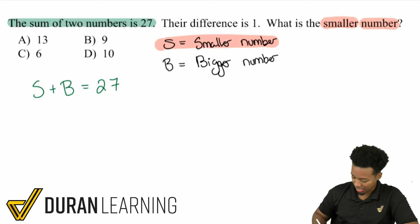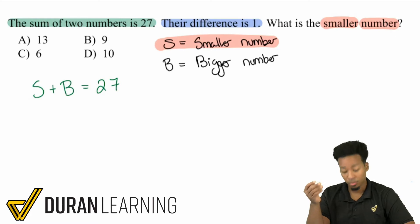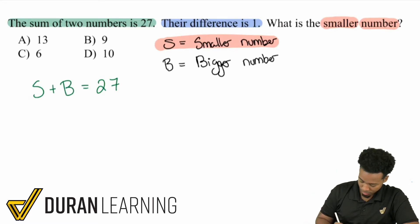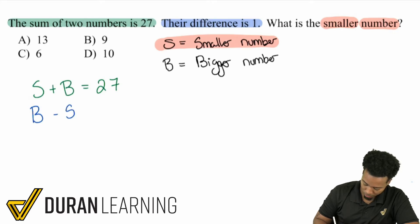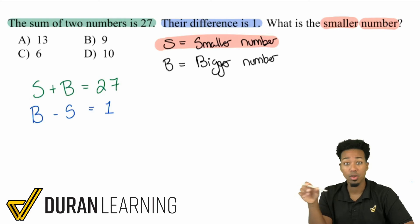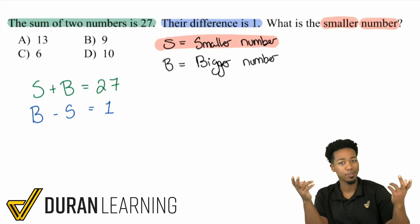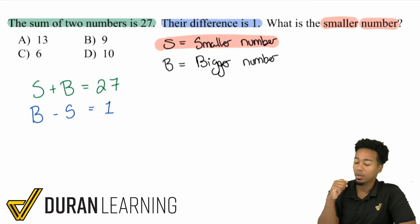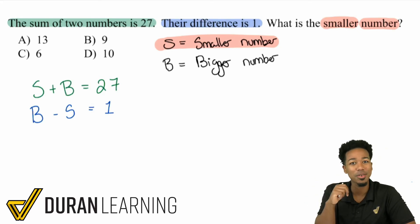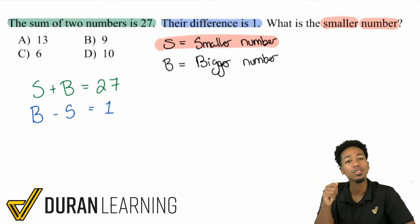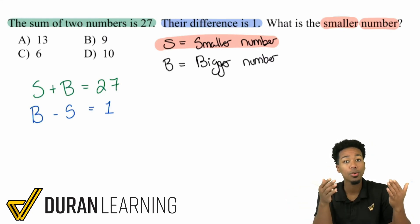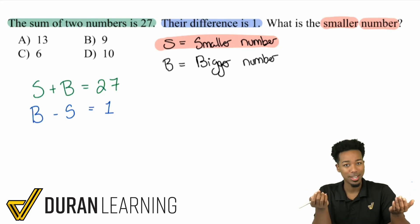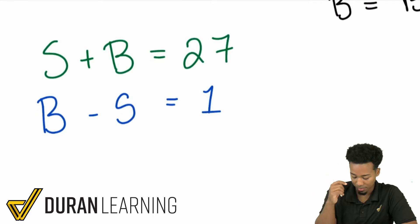Now the second sentence: their difference is one. Difference means subtraction. We take the bigger number minus the smaller number, so B minus S equals 1. You can't write S minus B because B is the bigger number. So our system is: S plus B equals 27, and B minus S equals 1. Both elimination and substitution will work here.